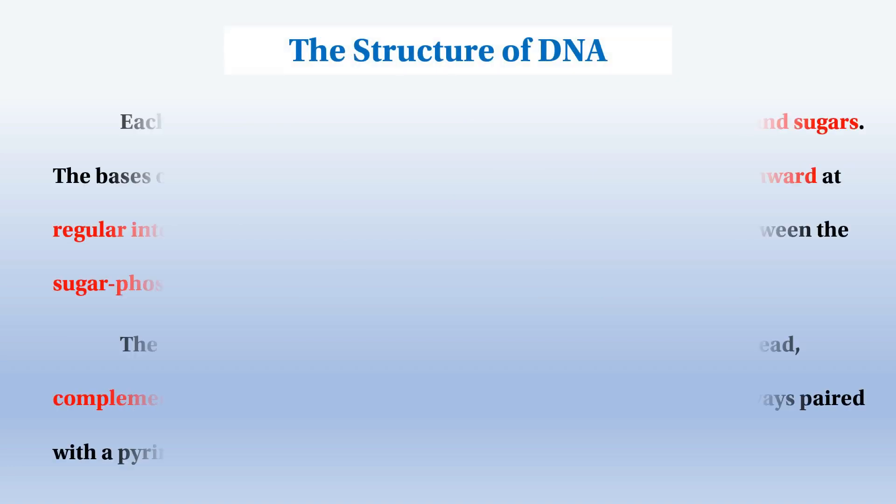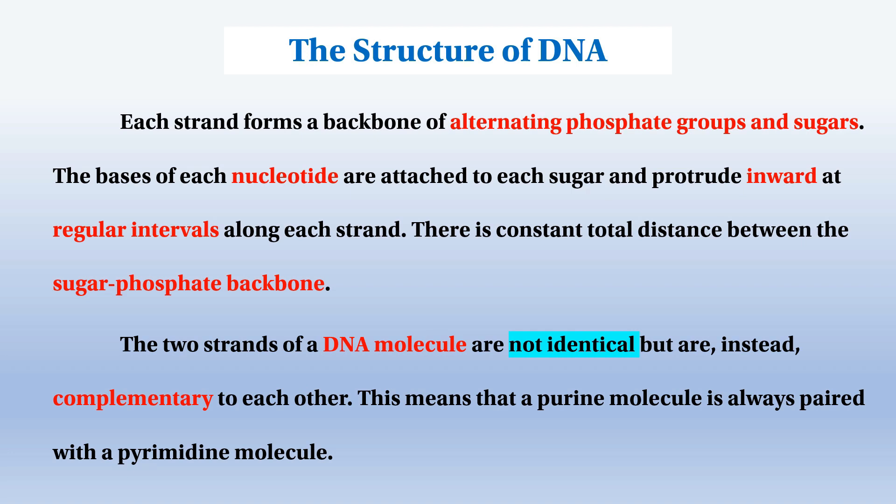The helical structure of DNA has a backbone of alternating phosphoric acid and sugar. This backbone forms a double helix with alternating phosphoric acid and sugar units.